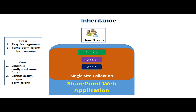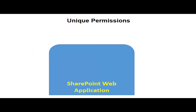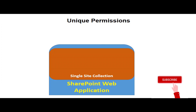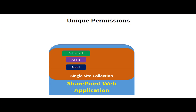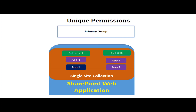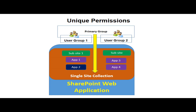In the unique permission model, there is a SharePoint web application with a single site collection — you may have multiple site collections, but I'm keeping it simple for easier understanding. You have one sub-site with application one and application two, and another sub-site with document library three and four. There is a primary group containing user group one and user group two.